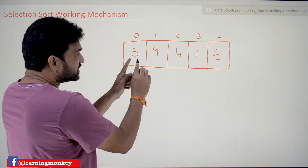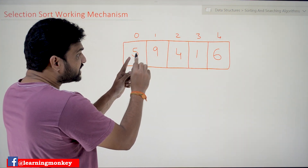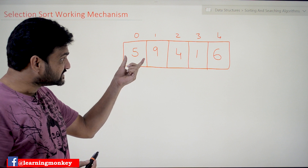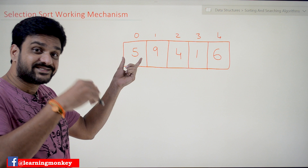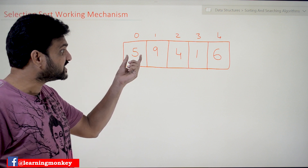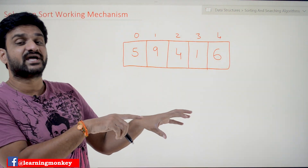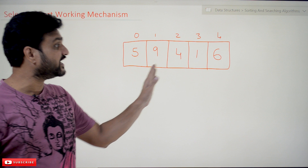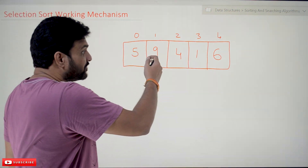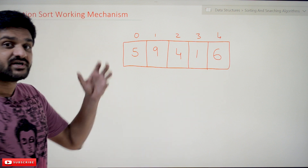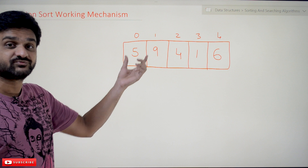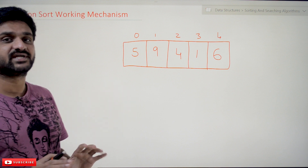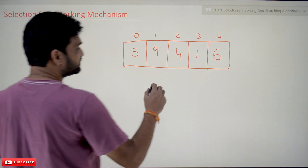We are going to take a position and compare each element. We are going to consider the element in that position as the minimum element. Assuming this is the minimum element, we compare it with all the remaining elements. If any element is identified as smaller than this element, then we consider that as the new minimum element. After comparing all the elements, whichever is the minimum element will be swapped into this position, and the original element will go to that position.